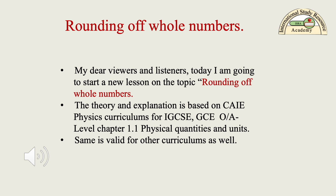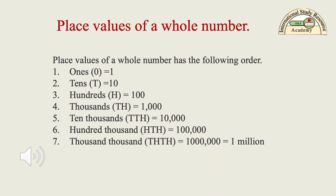Place Values of a Whole Number. The place values have the following order: 1st place value is equal to 1 (ones), 2nd place value is equal to 10 (tens), 3rd place value is equal to 100 (hundreds), 4th place value is equal to 1,000 (thousands), 5th place value is equal to 10,000 (ten-thousands), 6th place value is equal to 100,000 (hundred-thousands).